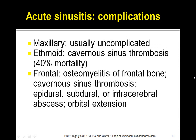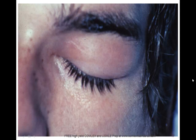The complications of acute sinusitis vary based on the sinus involved. Maxillary sinus involvement is usually uncomplicated, whereas ethmoid sinus involvement can lead to cavernous sinus thrombosis with 40% mortality. Frontal sinuses can lead to osteomyelitis of the frontal bone, cavernous sinus thrombosis, epidural, subdural, or intracerebral abscesses, or orbital extension. Here you can see the orbital region swelling.